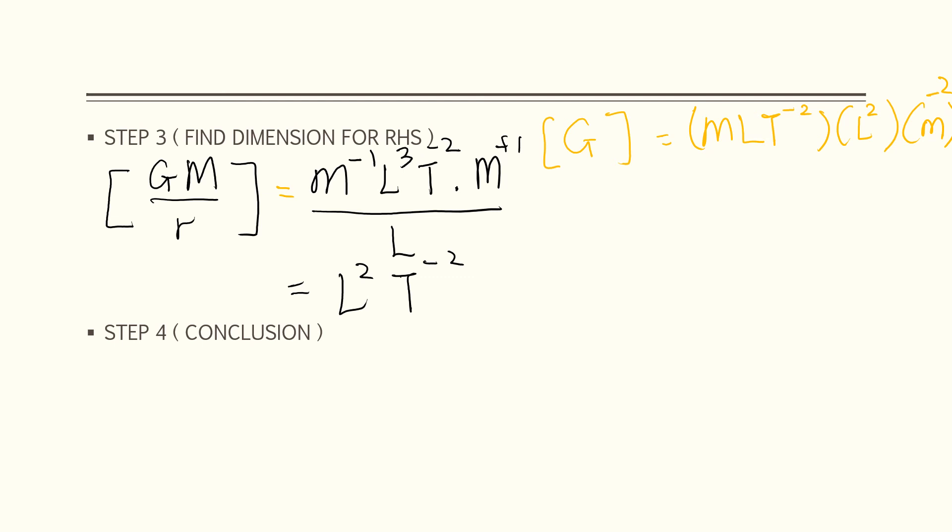So we can see that the left hand side, the conclusion, left hand side is equal to the right hand side. We got earlier, left hand side, we got L squared T to the negative 2. Right hand side we also got L squared T to the negative 2. So conclusion, left hand side is equal to right hand side. So you can say that the equation is homogeneous.